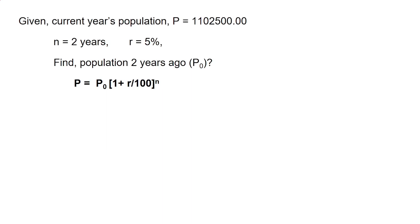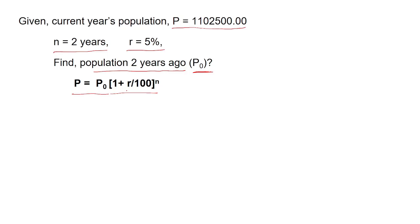The data given in the question is: current year's population, that is P equals 1,10,25,000; number of years, that is N equals 2 years; and rate of population increase, that is r equals 5 percent. We have to find the population of the city two years ago, that is P0.